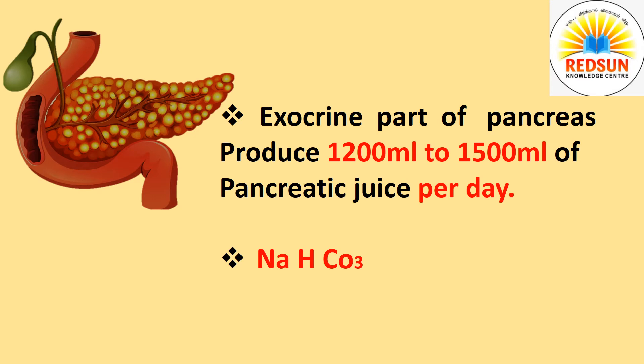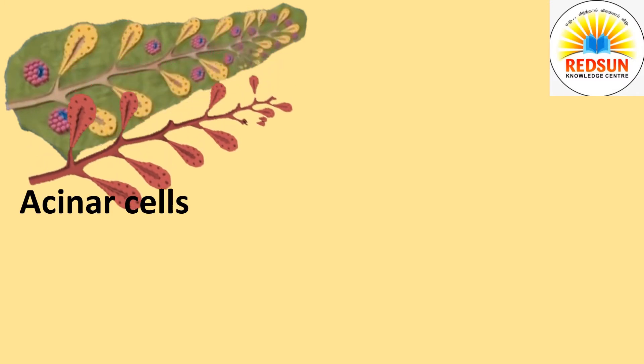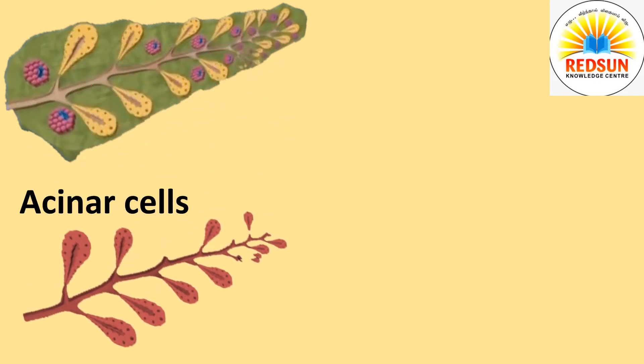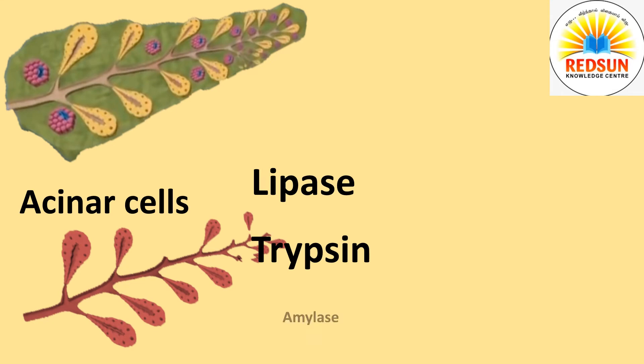The exocrine part of pancreas produces 1200 ml to 1500 ml of pancreatic juice per day. It contains sodium bicarbonate which makes pancreatic secretion alkaline. At the same time, the acinar cells secrete several enzymes like lipase, trypsin and amylase. These all help in digestion.